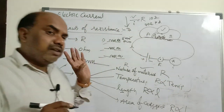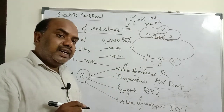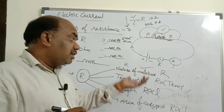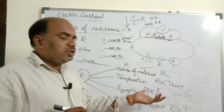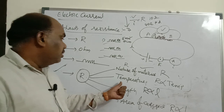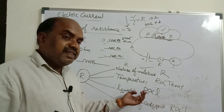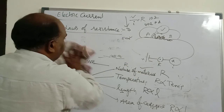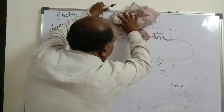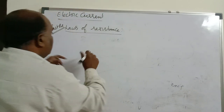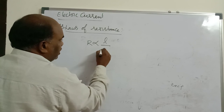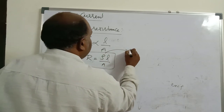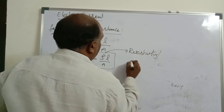Remember: resistance depends on four factors — nature of material, temperature, length of conductor, and area of cross section. Temperature increases → resistance increases. Length increases → resistance increases. Thickness increases → resistance decreases. From these laws, since R is directly proportional to L and inversely proportional to A, removing proportionality introduces a constant rho: R = rho × L/A. This rho is called resistivity, also called specific resistance.